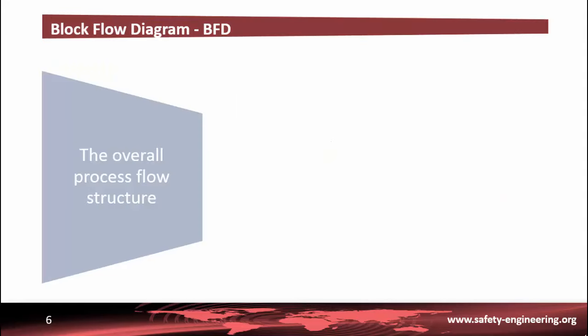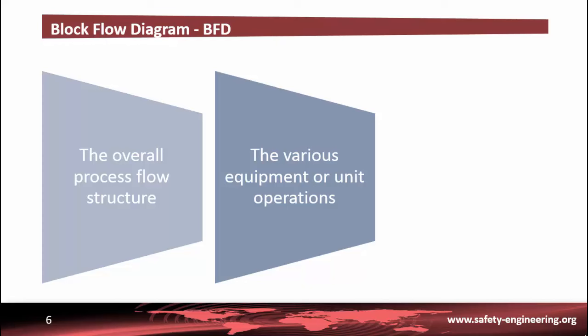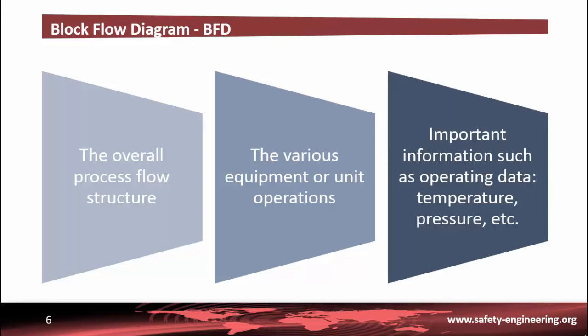First, let's take a look at the block flow diagrams. This kind of diagram can be used to give a rough idea of the global process flow structure and may be useful when giving presentations. These diagrams consist of a series of blocks representing different equipment or unit operations that are connected by input and output streams. Important information such as operating temperatures, pressures, conversions and yields are included in the diagrams along with flow rates and some chemical compositions.